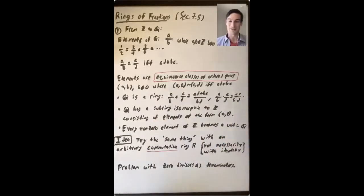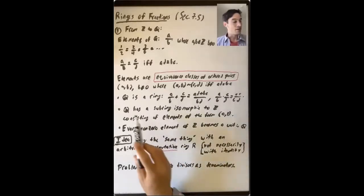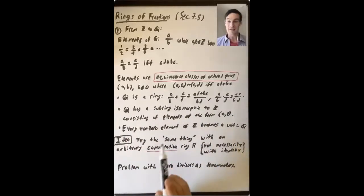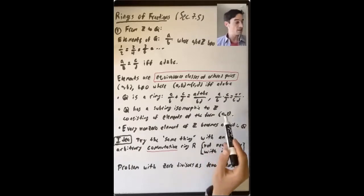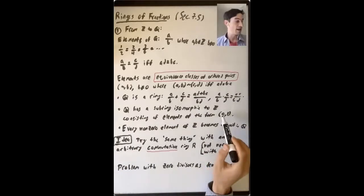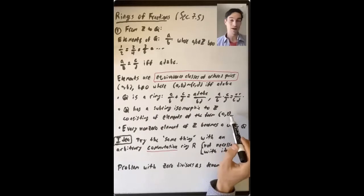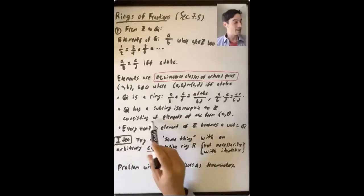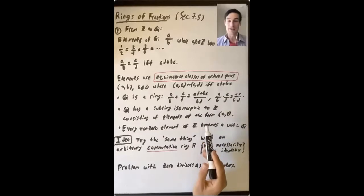So it's easy to check that this is a ring. Q has a subring isomorphic to Z, consisting of all the elements of the form (a, 1), so a over 1, where a is some integer and 1 is the denominator.